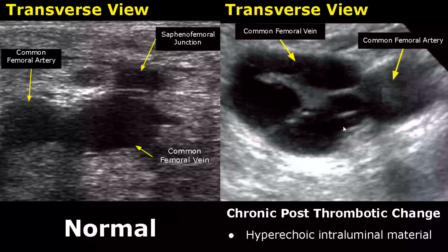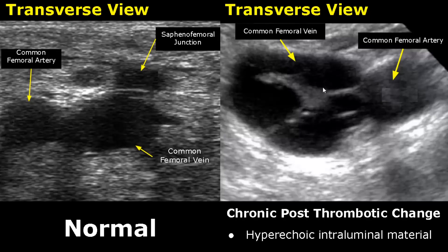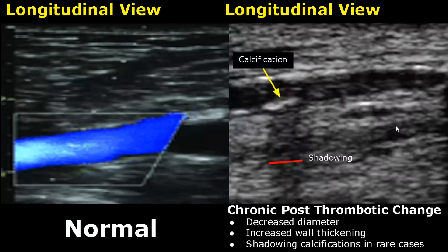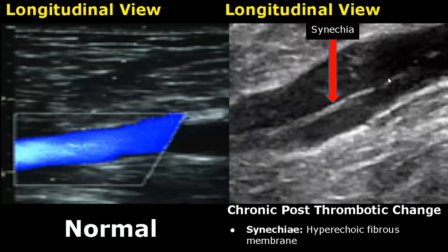Chronic post-thrombotic changes have their own features. These are chronic cases of deep vein thrombosis. The intraluminal material becomes hyperechoic. The vein may have a decreased diameter and undergo an increase in wall thickness. The wall of the vein may also be irregular. In rare cases, calcifications with posterior acoustic shadowing may be found attached to the vessel wall. You can also see a decreased diameter of the vein. Synechiae is a hyperechoic fibrous membrane that may be found in chronic post-thrombotic change.